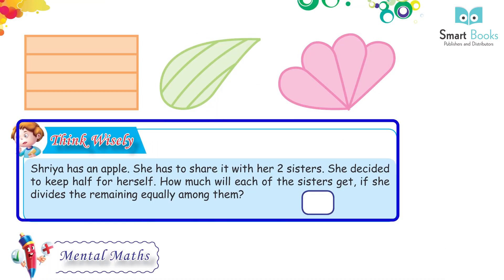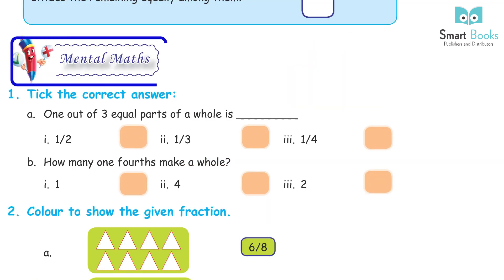Think wisely. Shreya has an apple. She has to share it with her two sisters. She decided to keep half for herself. How much will each of the sisters get if she divides the remaining half equally among them? Answer: one third.